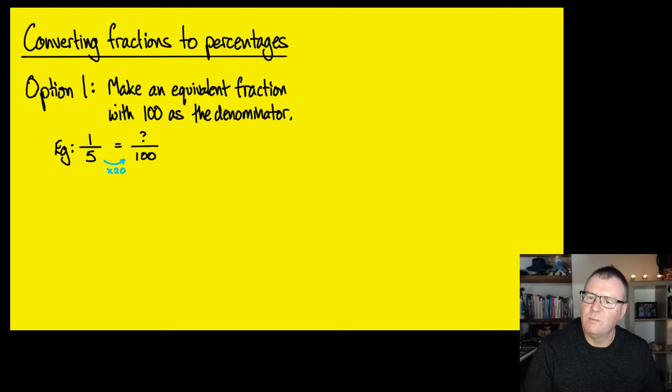If I did that on the bottom, I've got to do the same across the top. So I start with a 1, multiply by the 20, and end up with a 20 as my numerator. So 1 over 5 and 20 over 100 are what we call equivalent fractions. They're the same thing. One fifth of something is the same as 21 hundredths of something. They're equivalent to each other.